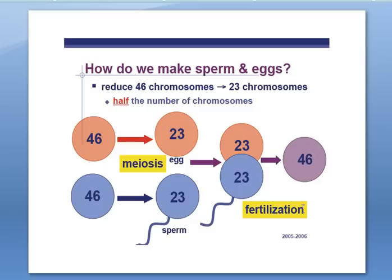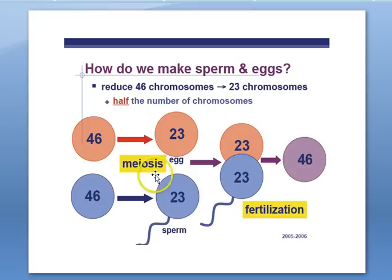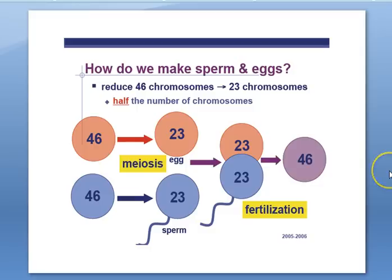How do we make sperm and egg? The answer is meiosis. We have half the number of chromosomes in the sex cells than we do in our body cells. In meiosis, we go from 46 chromosomes to 23 chromosomes. Our sex cells, called gametes, have 23 chromosomes in the egg and 23 chromosomes in the sperm. When the egg gets fertilized by the sperm, we now have 23 plus 23 chromosomes — two sets of chromosomes — and now we're back at 46.